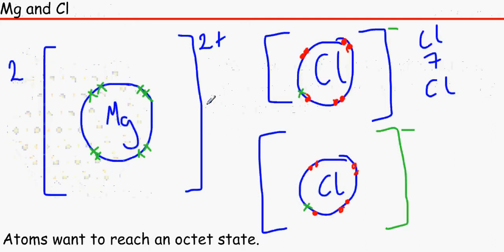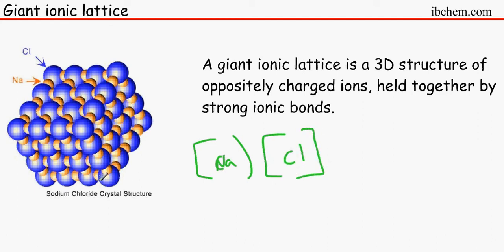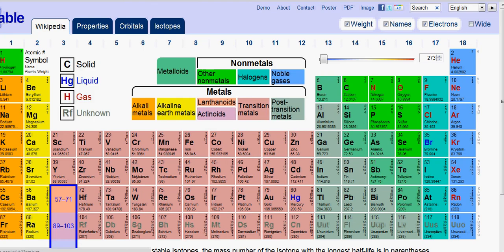Let's go with sodium and chlorine. Na and Cl will join together — lots and lots of them — into a 3D structure, and that is basically what a giant ionic lattice is: a 3D structure of oppositely charged ions. Sodium is 1 plus and chloride is 1 minus, and they are held together by strong ionic bonds.